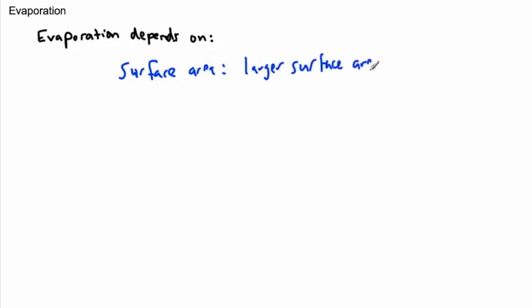A larger surface area - what will that mean? Well, if it's larger, there's more place for them to escape from, so more evaporation. I'm gonna write 'evap' for evaporation for short.